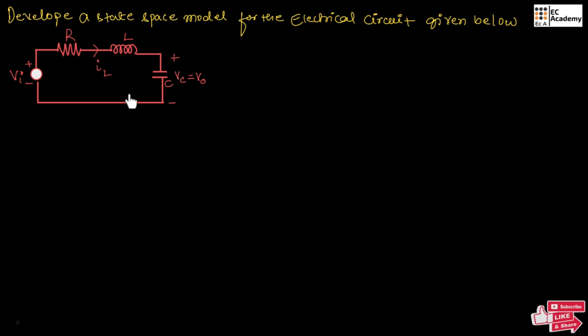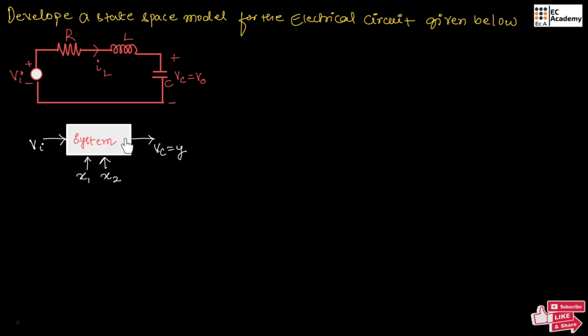For this electrical circuit, we need to develop the state space model, which means we need to write two equations: the state equation as well as the output equation for the given electrical circuit. Here, an electrical system is given whose input is Vi and output is Vc. Let us take this output as Y.